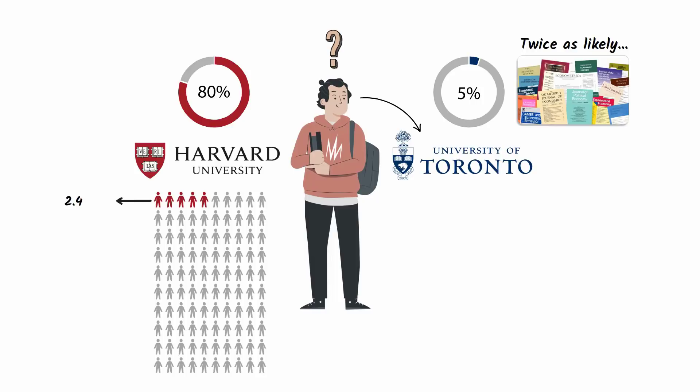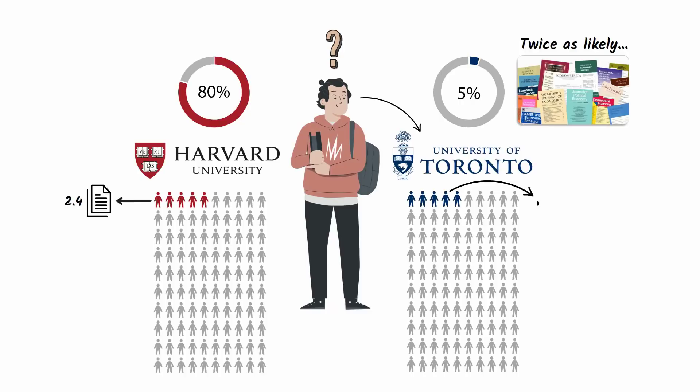Harvard economists who graduate in the top 5% of their class publish 2.4 papers in the six years after they graduate. University of Toronto economists who graduate in the top 5% of their class publish an average of 1.8 papers in the six years after they graduate. But Harvard economists who fail to graduate in the top 20% of their class published just 0.7 papers in the six years after graduation.